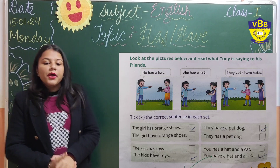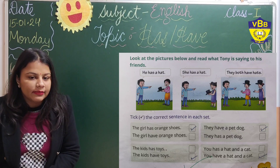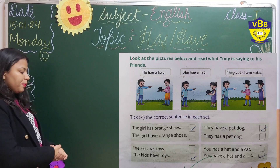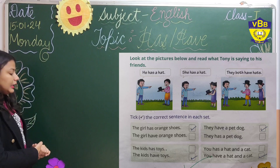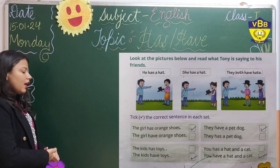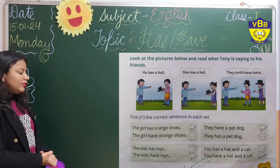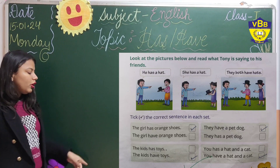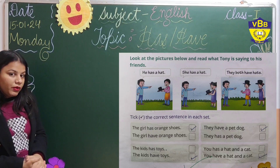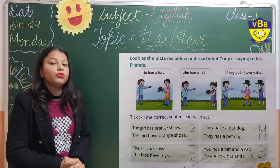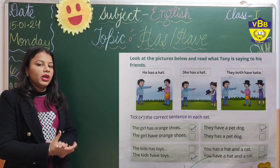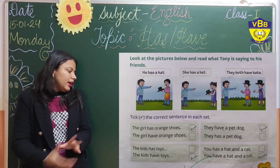Now read the next set: 'The cats has orange paws' or 'The cats have orange paws' — which is correct? Has or have? Yes — here we are talking about so many cats, so we use 'have.' Put a tick on the second sentence: 'The cats have orange paws.'